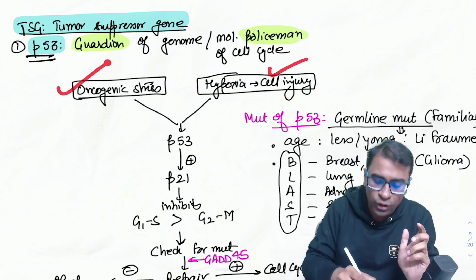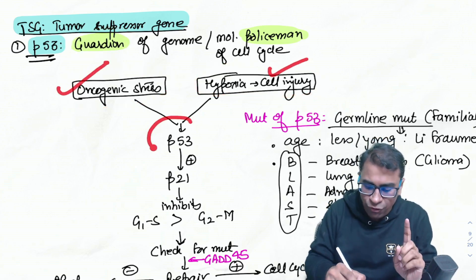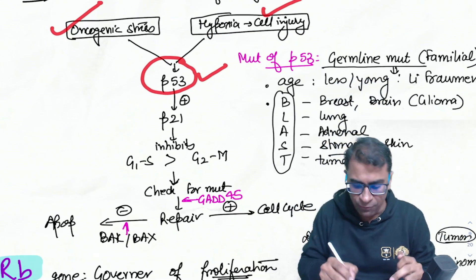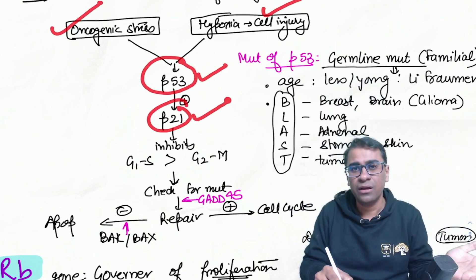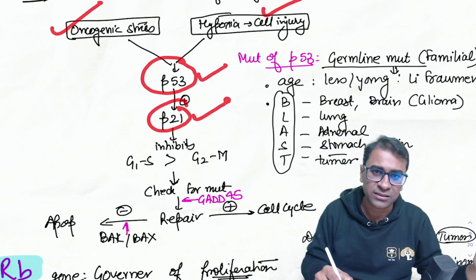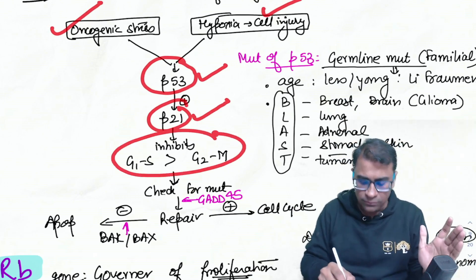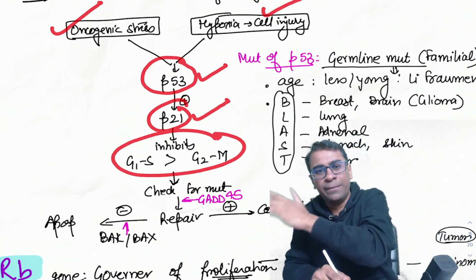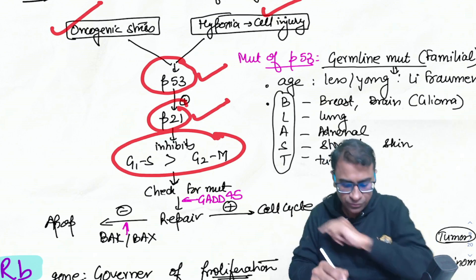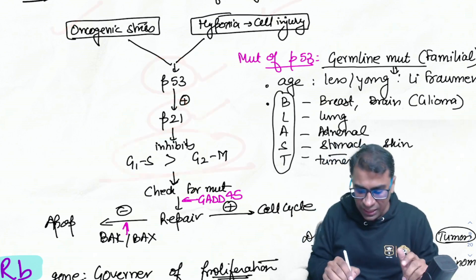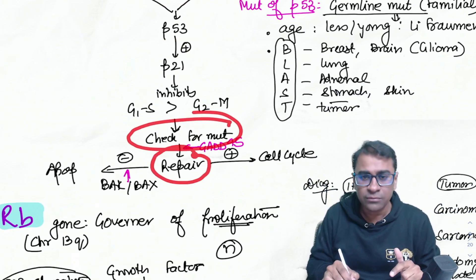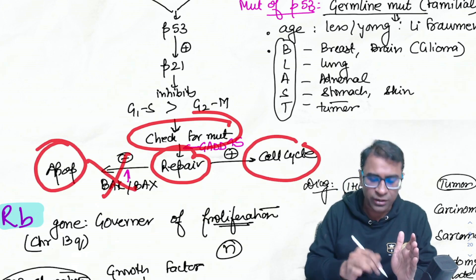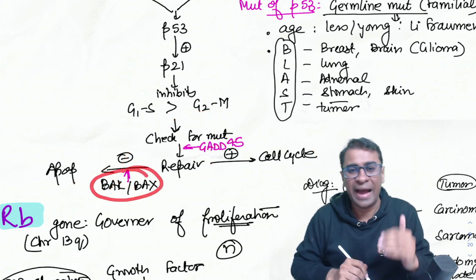In case of any cell injury or oncogenic stress, P53 (the father) activates P21 (the mother). P21 is a cell cycle inhibitor that stops the cell at the G1/S checkpoint (more than G2/M). The cell is then checked for mutations — if repair is possible, it re-enters the cell cycle; if not, apoptosis occurs via activation of BAX.